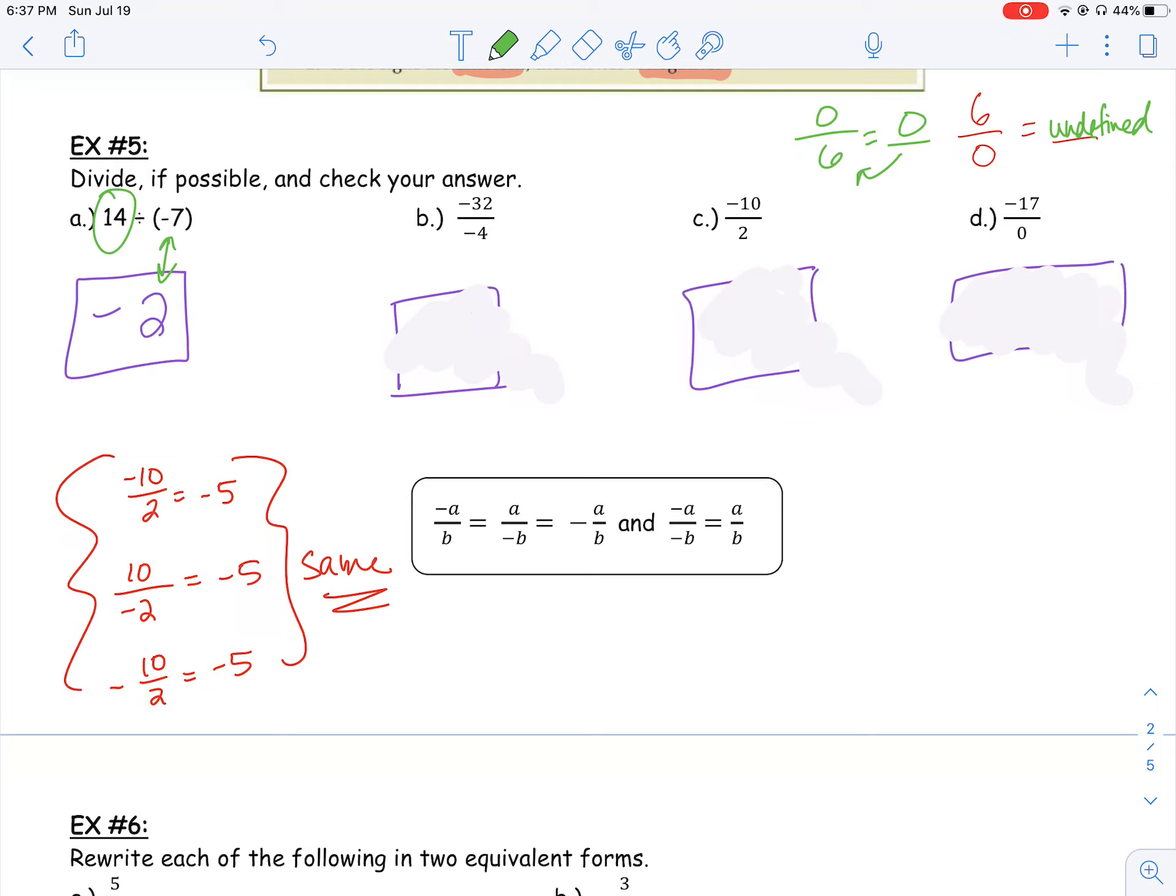All right, what about B? If I have negative 32 divided by negative 4, two negatives make a positive, and how many times does 4 go into 32? Well, I end up getting positive 8. What about C? If we have a negative 10 divided by positive 2, negative divided by a positive is a negative, and I end up getting negative 5. Again, I can always double-check. 2 times negative 5 is negative 10, so I know I got the right answer.